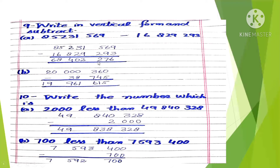Question 9: Write vertically and subtract. 9 minus 3 is 6. Next digit: 6 is less than 9, so borrow from the previous digit — 5 becomes 4, and we get 16 minus 9 is 7. Then 4 minus 2 is 2. Next: 1 minus 9 — borrow to get 11 minus 9 is 2. Then 2 minus 2 is 0. Next: 2 minus 8 — borrow to get 12 minus 8 is 4. Then borrow again: 15 minus 6 is 9, sorry 14 minus 6 is 8. Finally 7 minus 1 is 6. Solve all parts using this method.